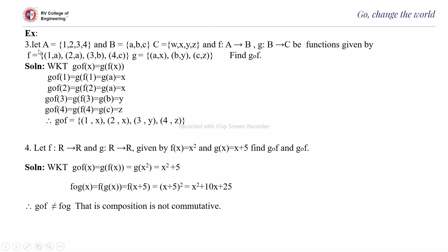Next: A = {1, 2, 3, 4}, B = {a, b, c}, and C = {w, x, y, z}. F is a function from A to B, G is a function from B to C, given by F = {(1,a), (2,a), (3,b), (4,c)} and G = {(a,x), (b,y), (c,z)}. Find Gof.